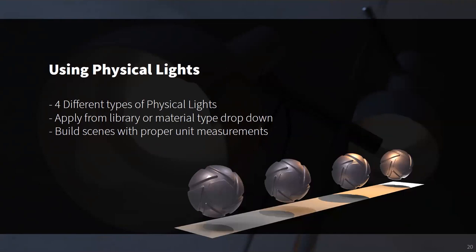Now let's transition into using physical lights to light your scenes. In Keyshot, you have four different types of physical light sources, each creating a unique lighting effect. They can be applied through the material type dropdown under your material tab, or by dragging and dropping preset lighting profiles from the lighting directory in your materials tab. As a forewarning, take care to ensure your scene units accurately reflect real-world measurements — this is especially important when using IES lighting profiles.